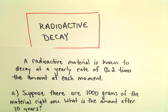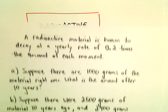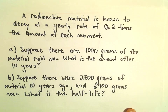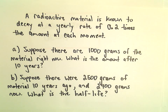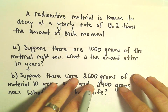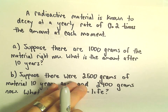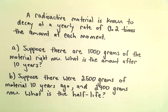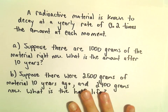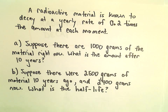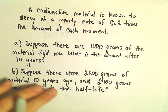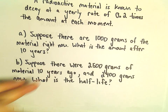We're going to look at a question related to radioactive decay. A radioactive material is known to decay at a yearly rate of 0.2 times the amount at each moment. In part A, there are 1,000 grams of the material right now, and we want to know what the amount is after 10 years.